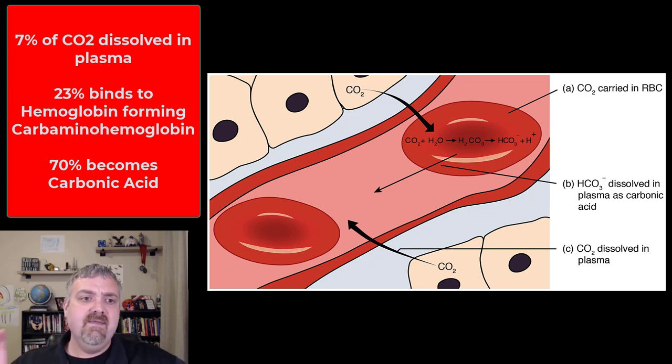We'll come back to acid base disturbances later. The last 23% of carbon dioxide is carried on carbaminohemoglobin. So we know what hemoglobin is, oxyhemoglobin is hemoglobin carrying oxygen, deoxyhemoglobin is hemoglobin that's dropped off its oxygen at body tissues.